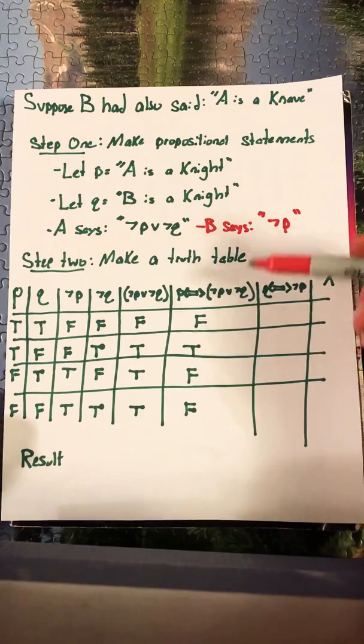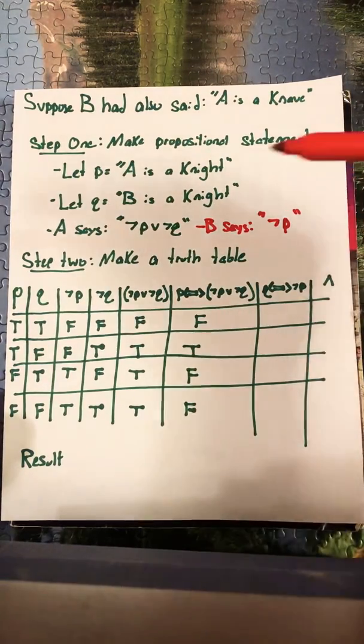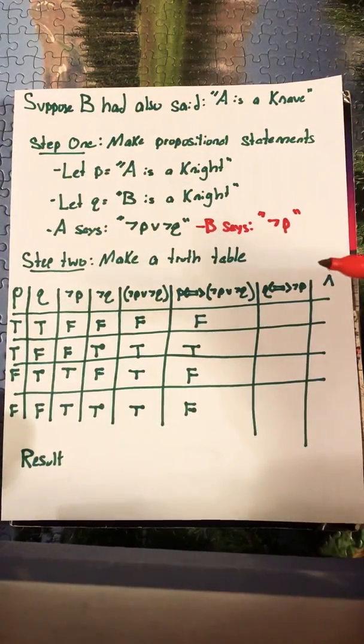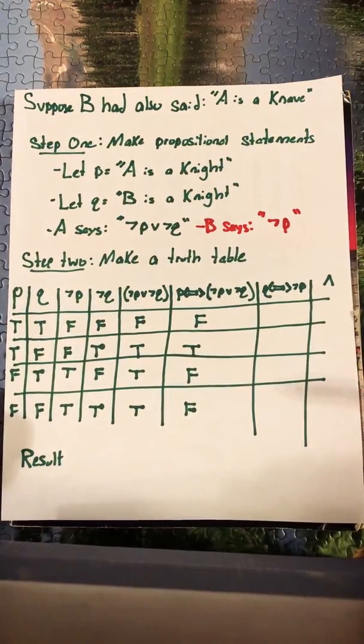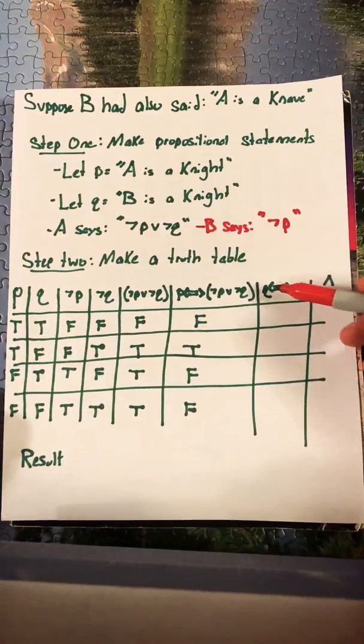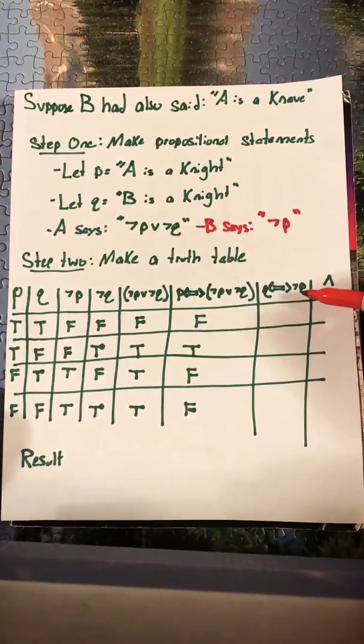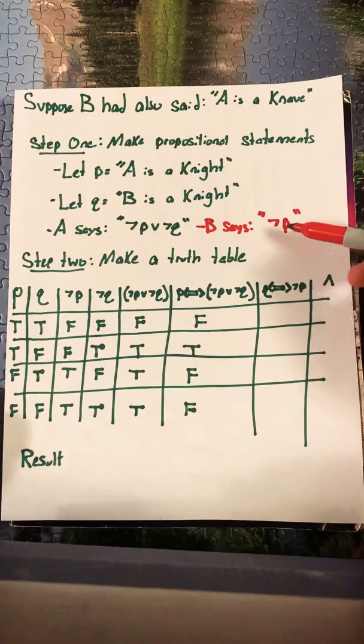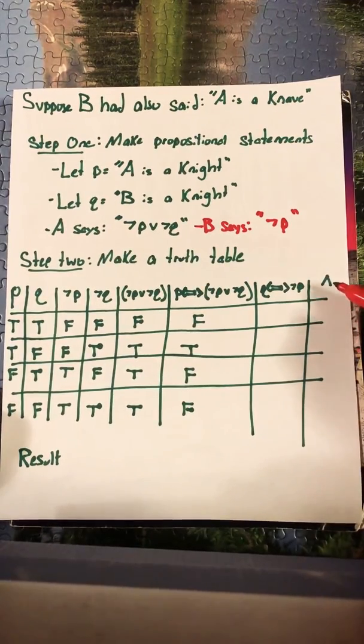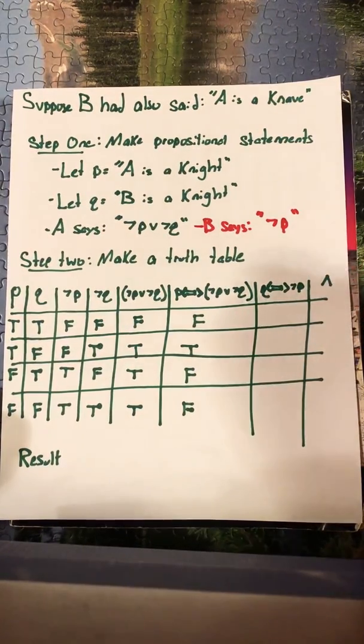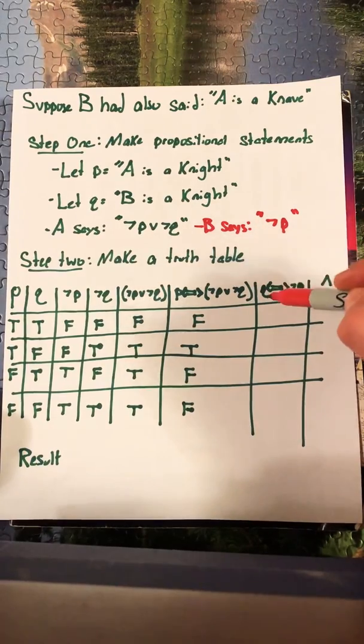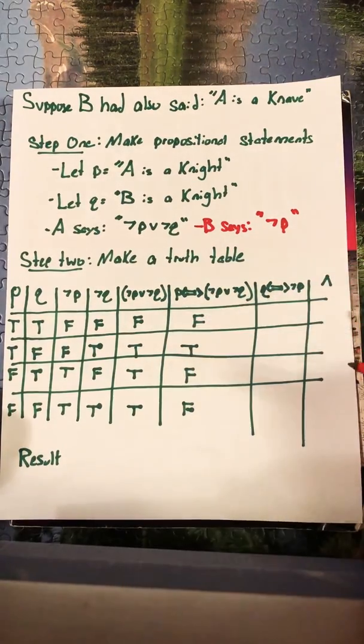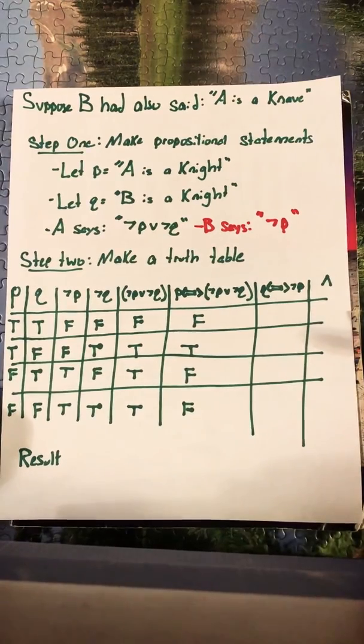Now we go and we make a truth table. I've set the truth table just the same way we did before and I filled it out fully. However you're going to notice two extra rows here. This row is Q if and only if not P. So this is essentially checking what B said. Here I've just simplified it to be the and. So what we're actually going to be comparing is P if and only if not P or not Q and Q if and only if not P. So let's solve the rest of the table here.